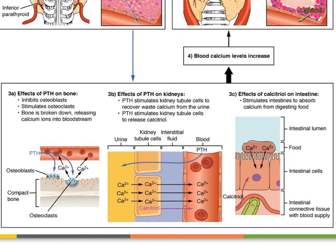Another important function of the kidneys is to secrete the finalized form of vitamin D, which we call calcitriol. The skin starts the process of vitamin D synthesis with the help of the sun, then the liver modifies the molecule, and it's not until that molecule reaches the kidneys that it becomes the active form of vitamin D — more specifically vitamin D3, or calcitriol — which is secreted into the bloodstream, making the kidneys an endocrine organ.